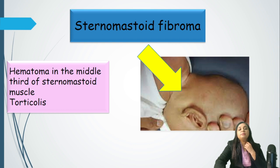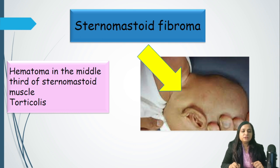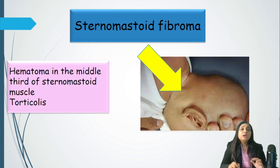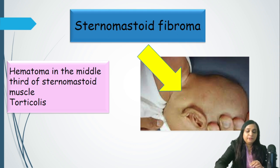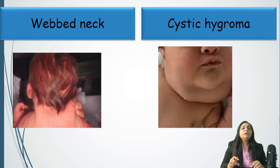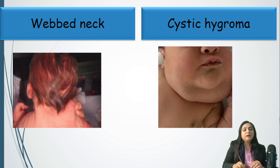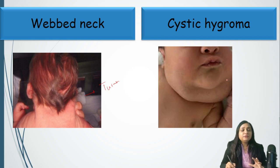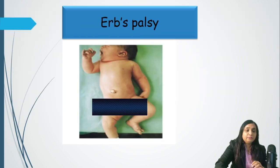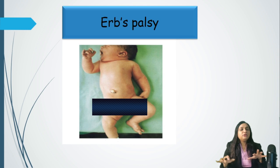In the neck, we need to see the presence of sternocleidomastoid fibromatosis — it is a hematoma seen in the middle third of the sternomastoid muscle. The child may present with neck swelling and torticollis; physiotherapy is the primary treatment. Webbing of the neck could be part of Turner syndrome. Cystic hygroma is an abnormality of lymphatic vessel development and can also present in Turner syndrome.